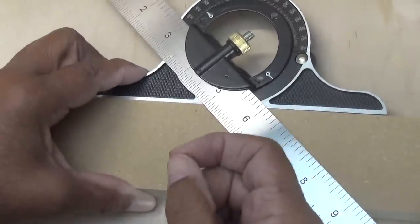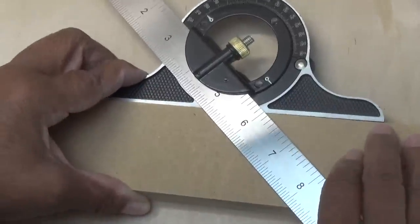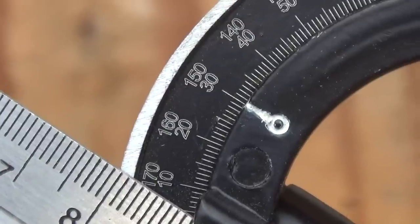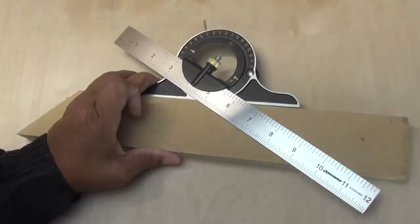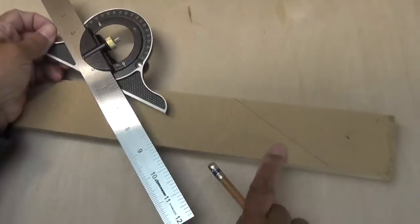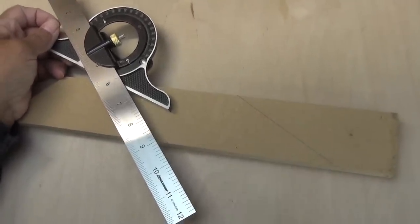If I want to fine-tune it maybe I want to actually set it at 30 degrees. Okay and if I strike a line here guess what that is a 30-degree angle. You can also use it for marking dovetails.